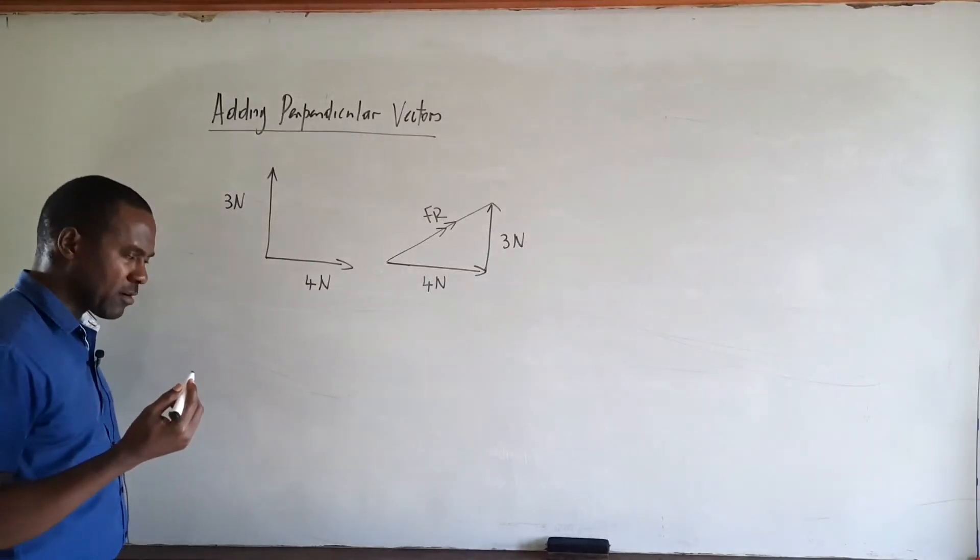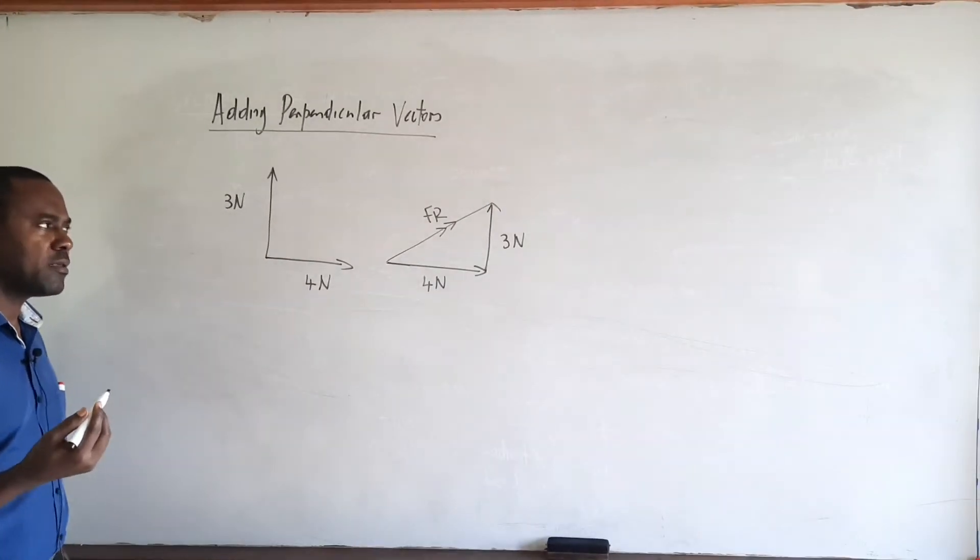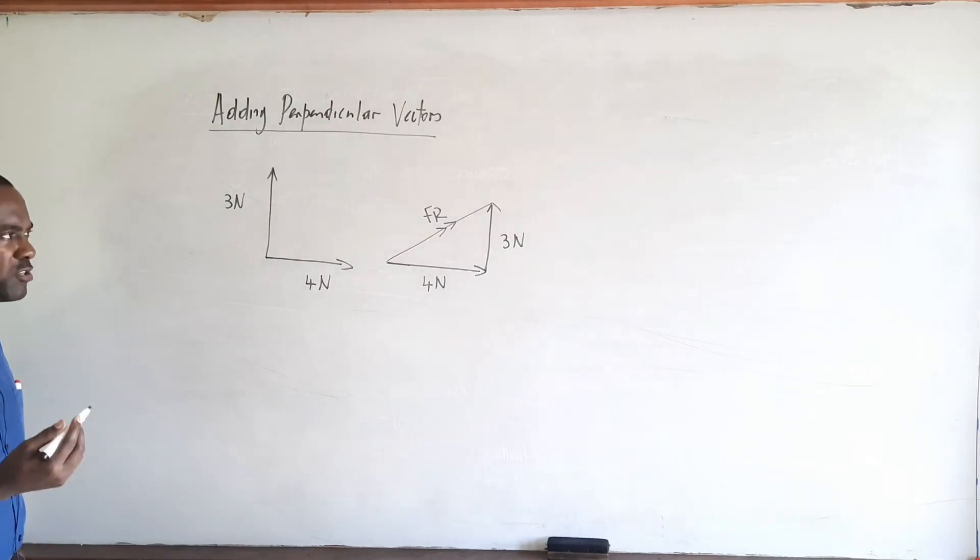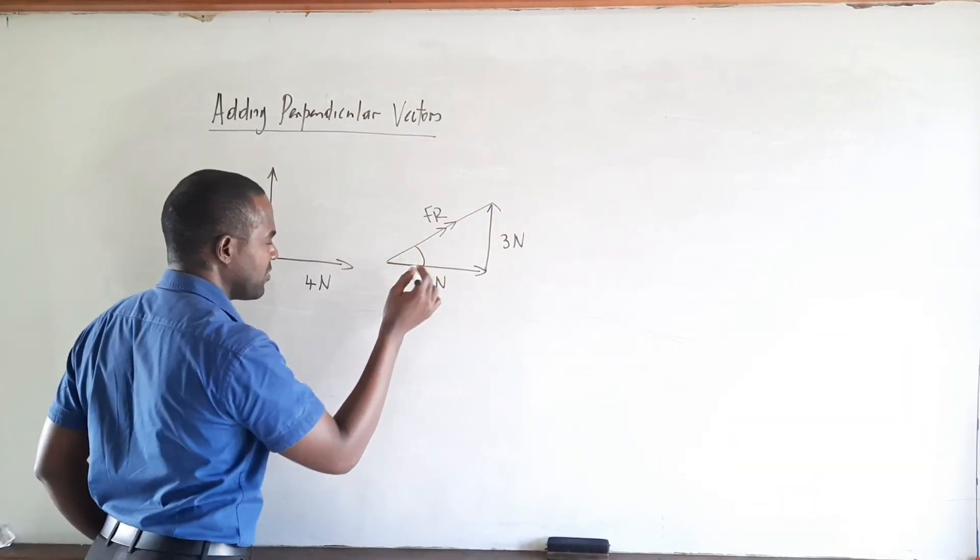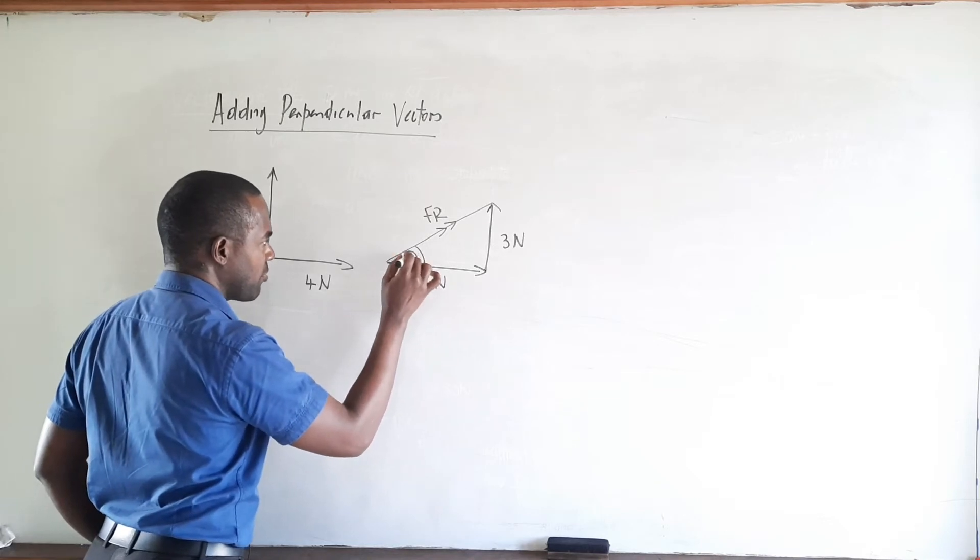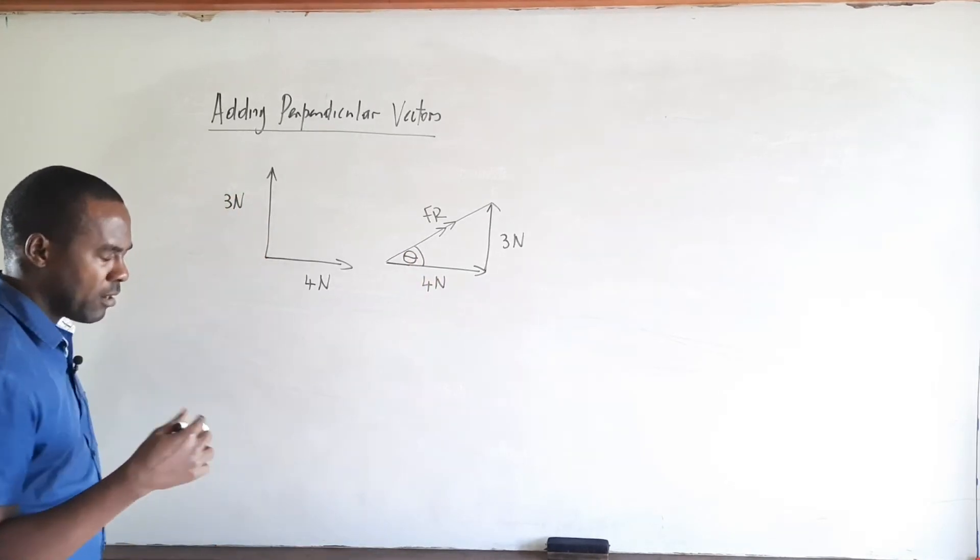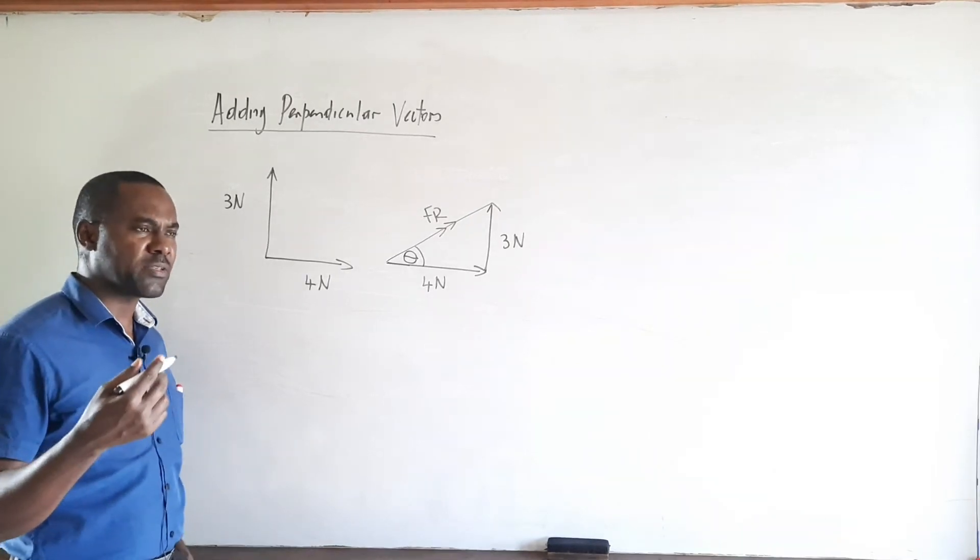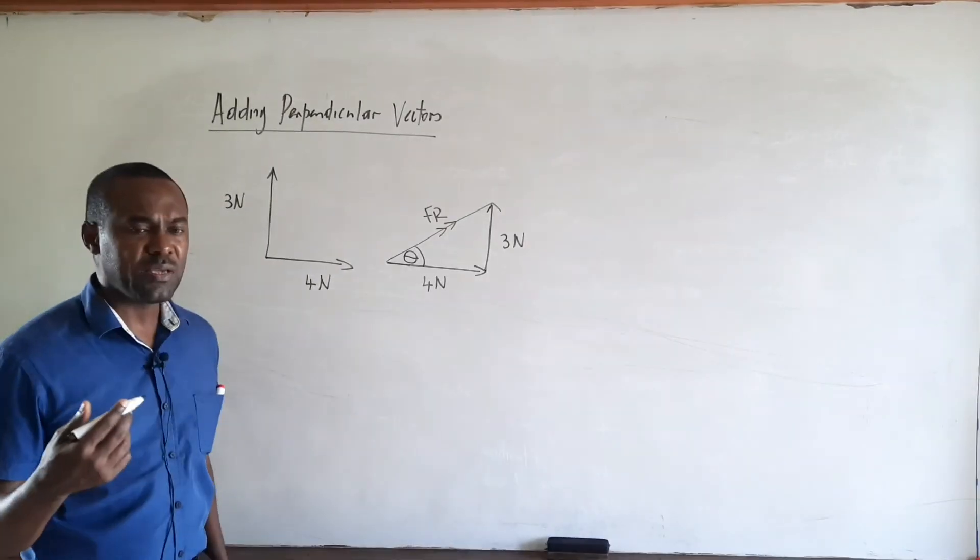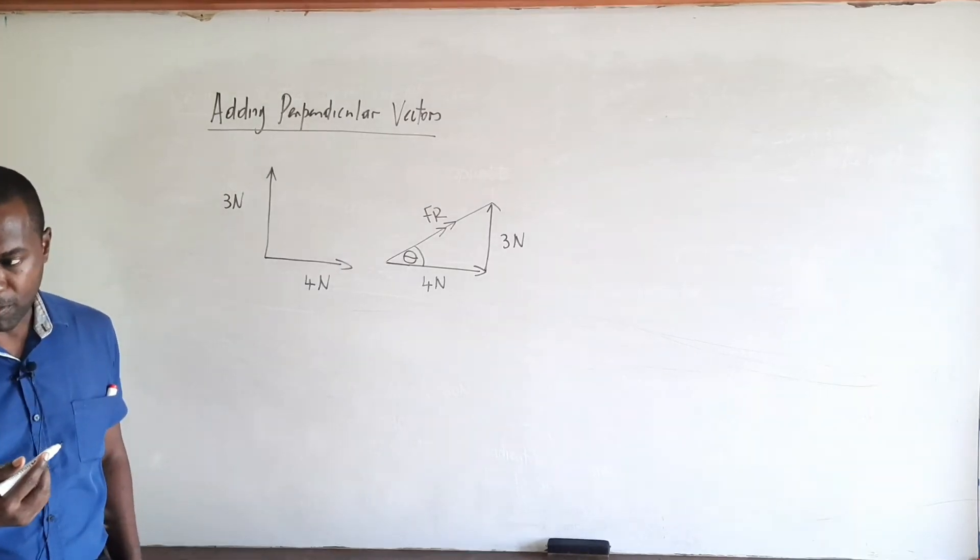We'll use Pythagoras' theorem to calculate the magnitude of the resultant, but we'll also need to calculate the direction, which is usually given as an angle with respect to either the horizontal or the vertical. In most cases the angle is given with respect to the horizontal, but it can also be given with respect to the vertical.